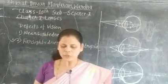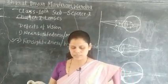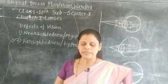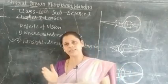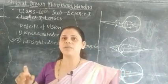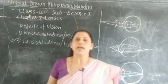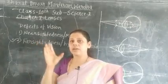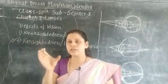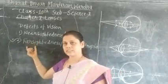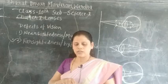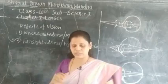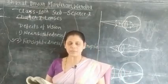There are two reasons behind farsightedness. The first reason is that the curvature of the cornea and eye lens decreases, so the converging power of the lens becomes less. In nearsightedness the curvature increases, which is why the converging power increases. But in farsightedness the curvature decreases, so the converging power of the lens becomes reduced.